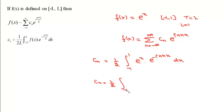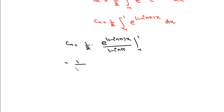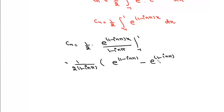Integrating, we write c_n equal to 1/2 times e to the power (1 minus iota n pi) times x, divided by (1 minus iota n pi), evaluated from minus 1 to plus 1. This gives 1 upon 2(1 minus iota n pi) times e to the power (1 minus iota n pi) minus e to the power (minus 1 plus iota n pi). Expanding, this becomes 1 upon 2(1 minus iota n pi) times e times e to the power minus iota n pi, minus e to the power minus 1 times e to the power plus iota n pi.